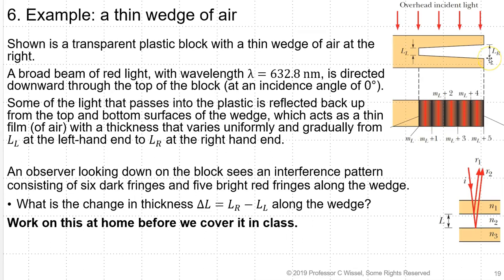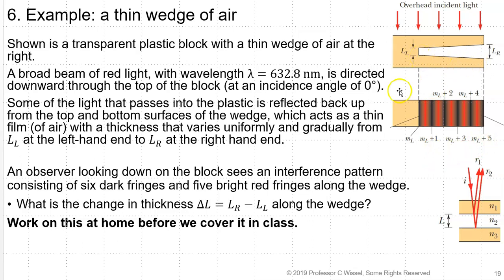A transparent plastic block has a thin wedge of air at the right. A broad beam of red light (λ = 632.8 nm) is directed downward through the top of the block at an incident angle of zero degrees. Some of the light is reflected back up from the top and bottom surfaces of the wedge, which acts as a thin film of air with thickness that varies uniformly from L_L on the left to L_R on the right. An observer looking down will see an interference pattern of 6 dark fringes and 5 bright fringes along the wedge. What is the change in thickness, L_R − L_L?